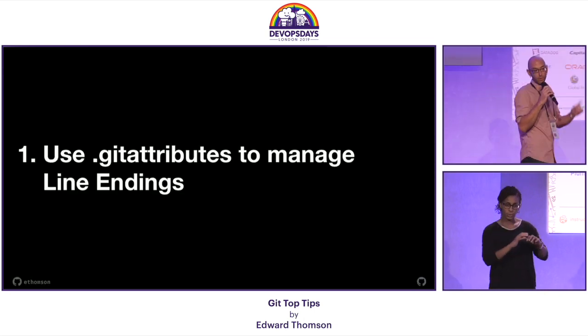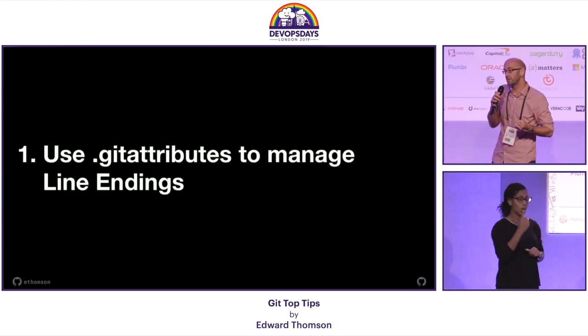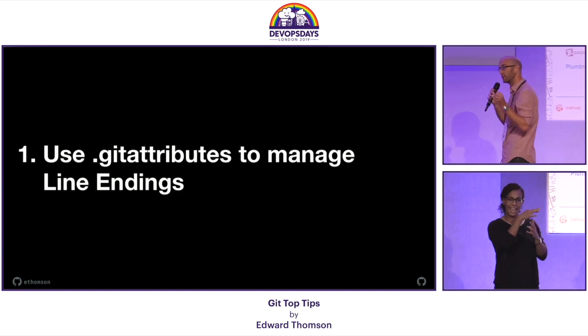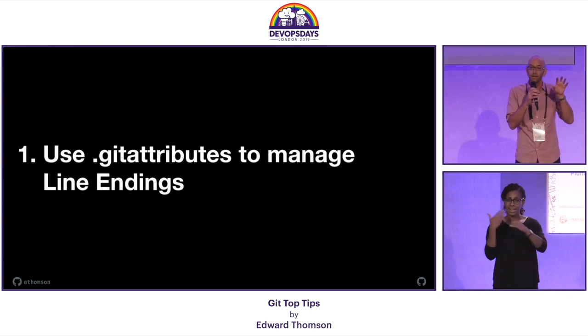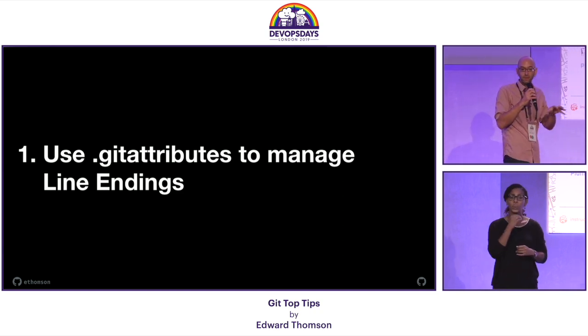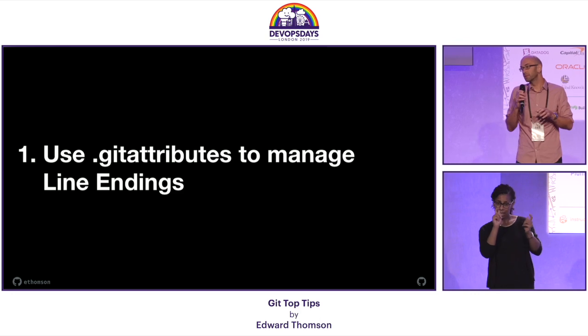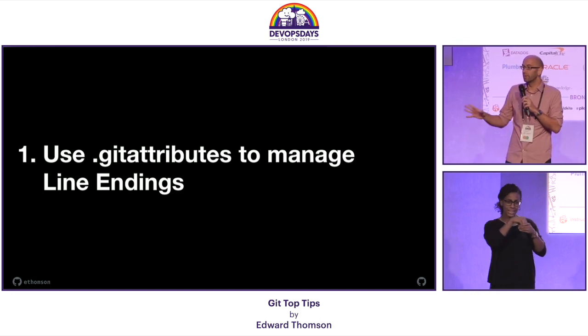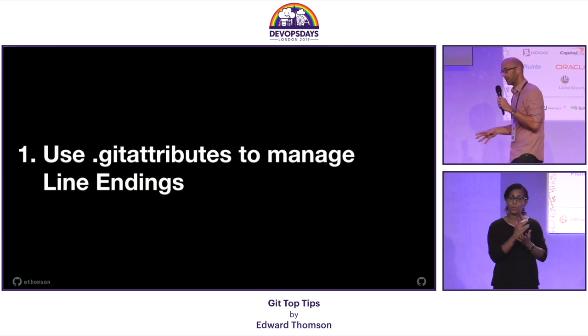So first, top tip: use a .gitattributes file to manage your line endings. I think it's really important to use .gitattributes because you can check this configuration into your repository. That means everybody has the same configuration.